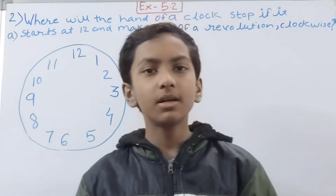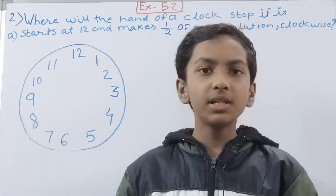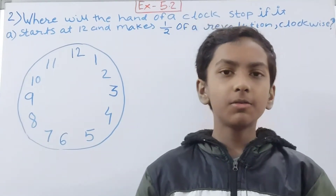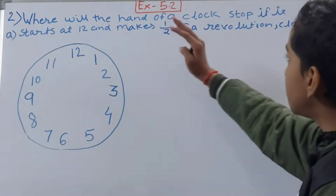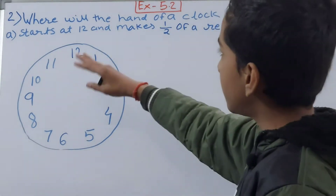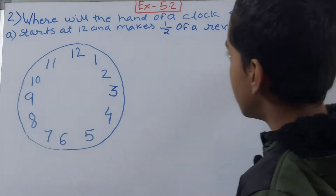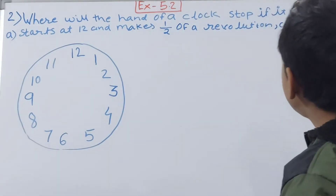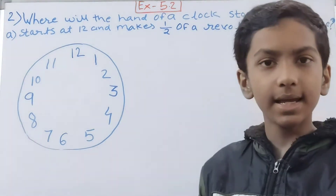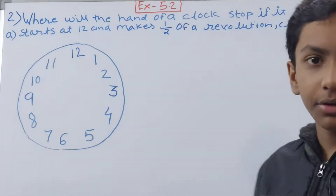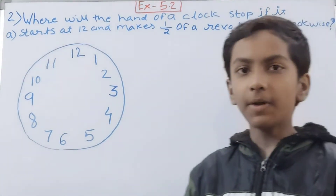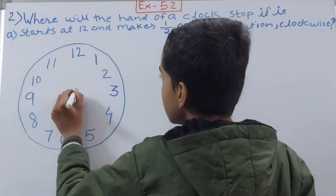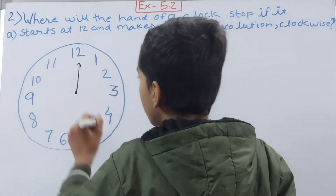Hello friends, welcome back to my YouTube channel 'Unlock Your Learning.' In this video we are going to solve NCRT Maths Class 6, Chapter 5, Understanding Elementary Shapes, Exercise 5.2, Question number 2. The question asks: where will the hand of a clock stop if it starts at 12 and makes 1/2 of a revolution clockwise? First of all, visualize a clock — your hand is at 12.